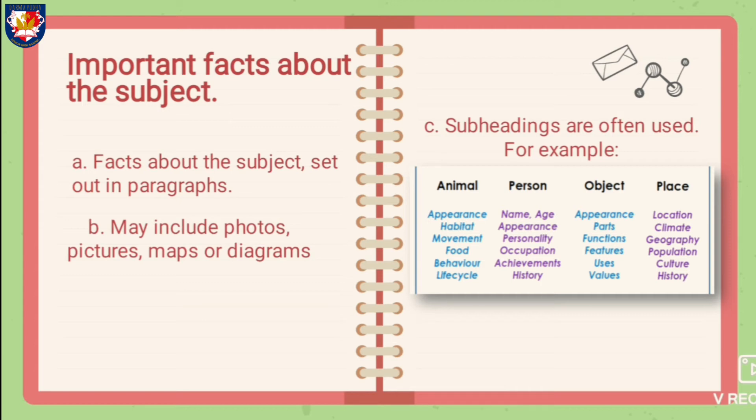If you are going to write about an object, do research about appearance, parts, functions, features, uses, and values. And the last one, if you want to write about a place, do research about the location, climate, geography, population, culture, and history.